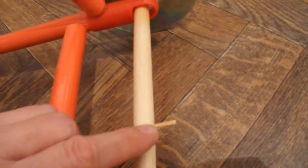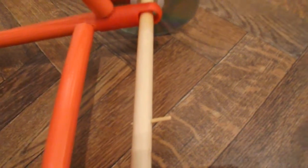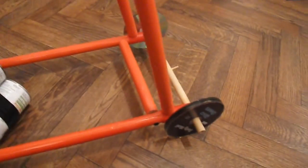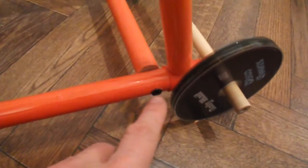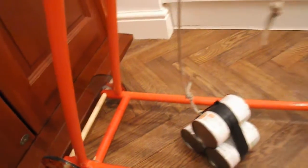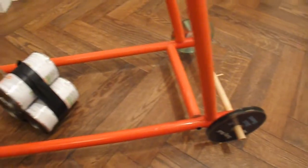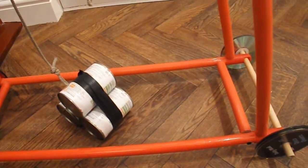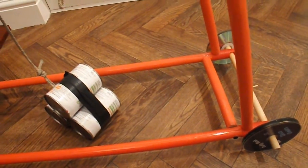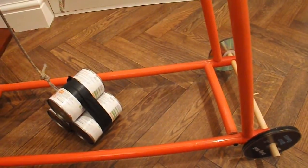And then the peg is just a bit of barbecue skewer. And that's it. The framework's just screwed together. So nothing special. In fact I think this is probably the first car I've made for ages that I haven't used any hot glue on. But there we are. That is a gravity powered car.